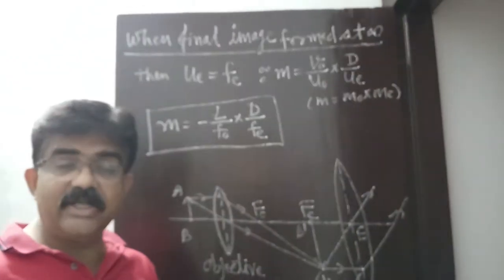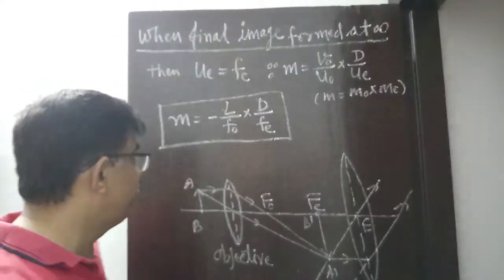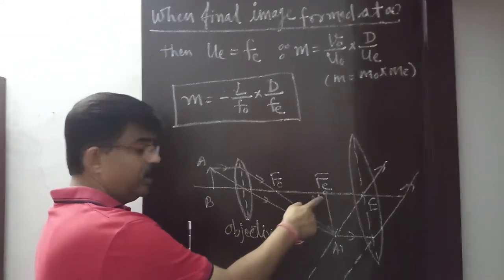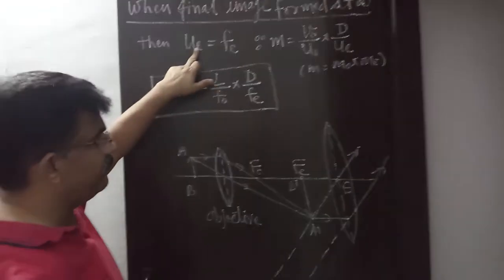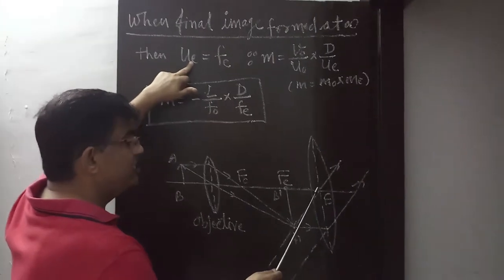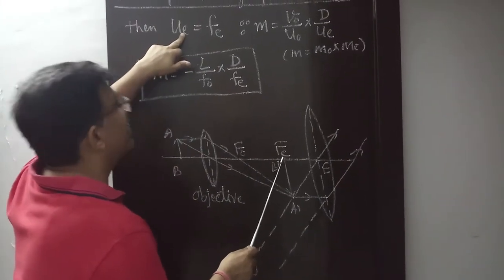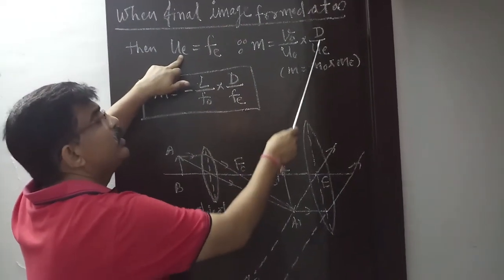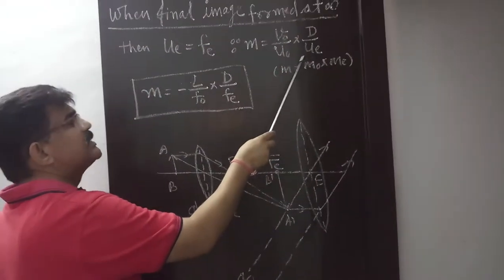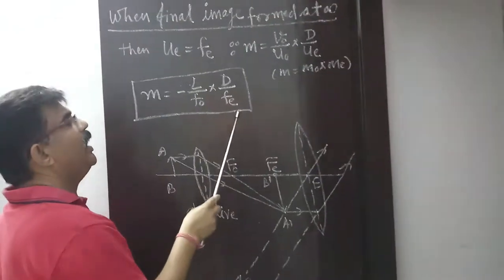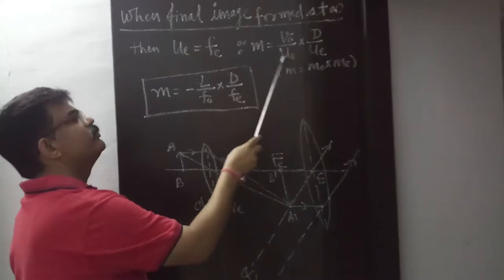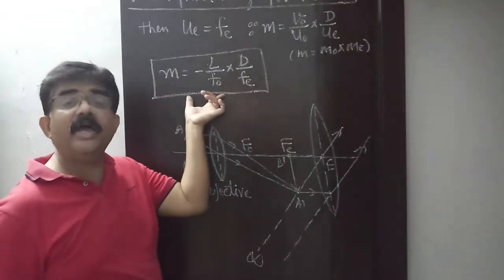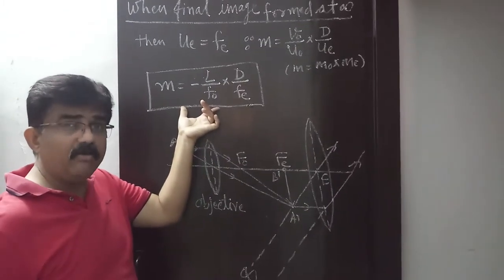For the second adjustment — when the final image is formed at infinity — the intermediate image A'B' must be formed at the focus of the eyepiece, so UE = FE. Starting from M = (VO/UO) × (D/UE), we substitute UE = FE, VO = L, and UO = -FO. Hence M = -L/FO × D/FE. This is the expression for the magnifying power of the compound microscope when the final image is formed at infinity.